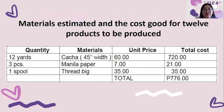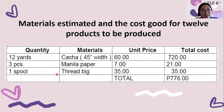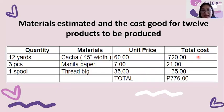Next, the estimated materials cost for 12 products to be produced. You need 12 yards of cloth, and per yard that costs 60 pesos, so 60 multiplied by 12 is 720 pesos. You need three pieces of Manila paper at 7 pesos each: 7 multiplied by 3 equals 21 pesos. You also need one large spool of thread costing 35 pesos. Adding 720, 21, and 35, the total is 776 pesos for the 12 products.